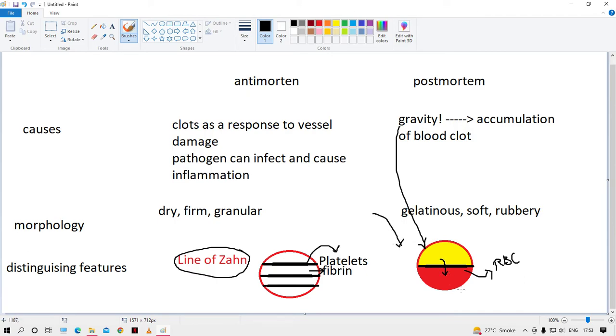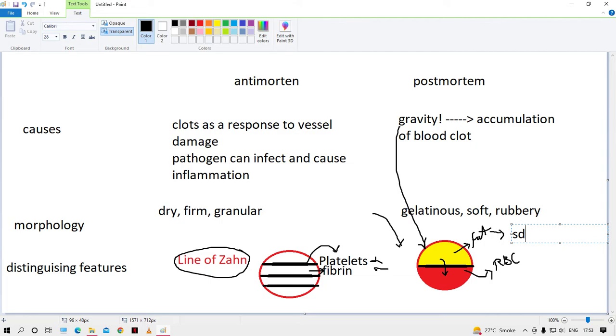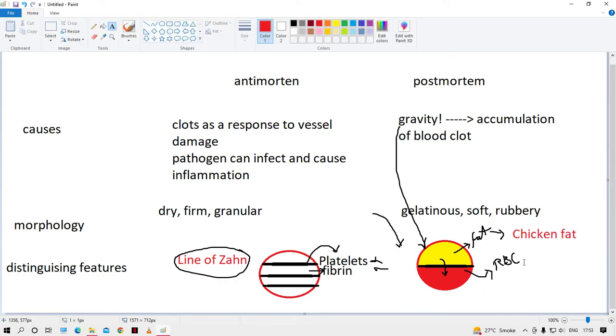On the lower part, there is accumulation of RBC—even in the clot there is accumulation of RBC. The lower part contains red blood cells, whereas the upper part is nothing but fat. Here there are no fibrins or platelets. Chicken fat is yellowish in color, so we call this fat chicken fat.